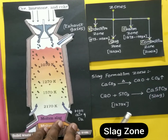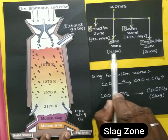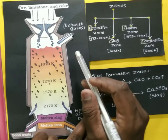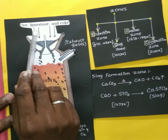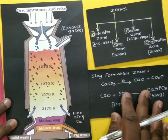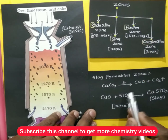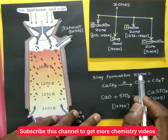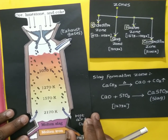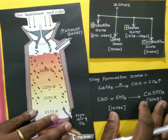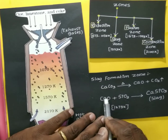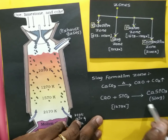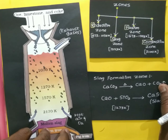The next zone is the slag formation zone — the third zone at 1273 Kelvin. Here, one of our raw materials is limestone. The limestone (CaCO3) is converted at high temperature into calcium oxide (CaO) and carbon dioxide. The calcium oxide then reacts with silica impurities present in the ore — which may also contain phosphorus and magnesium impurities — to form calcium silicate as slag, which is removed as slag.